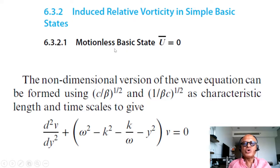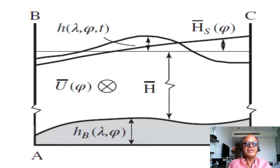We'll look for that in the case of a motionless basic state. The non-dimensional version of this wave equation we formed by using this non-dimensionalizing, this is the wave equation we had way back when. We transformed that in various ways by defining a meridional structure function for v and an exponential term, Hermite polynomial, and so on.